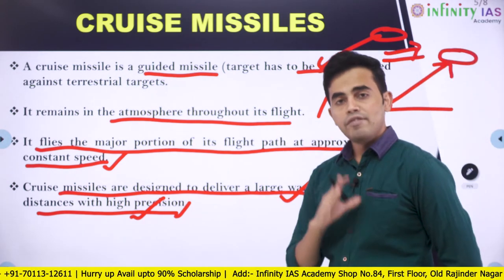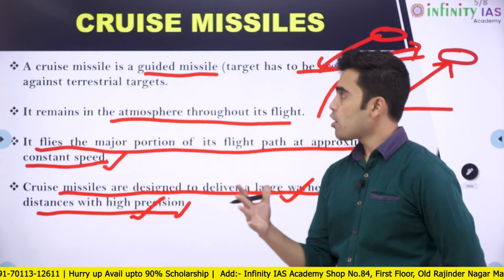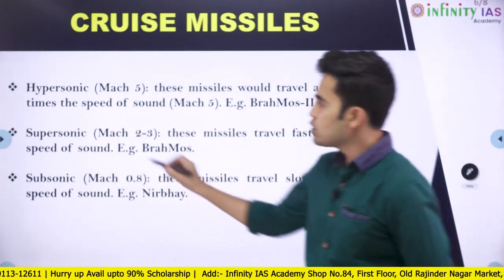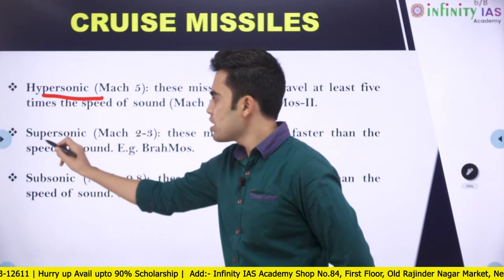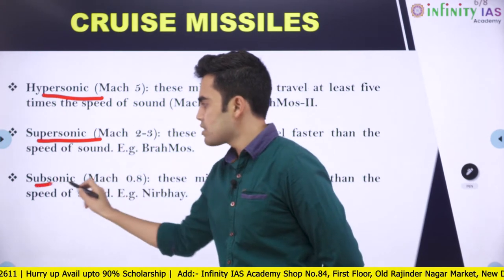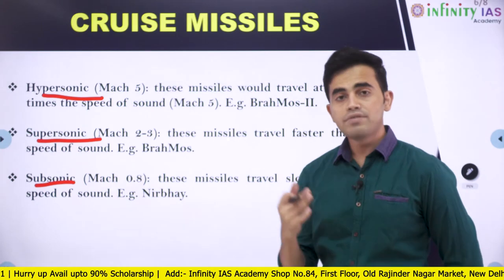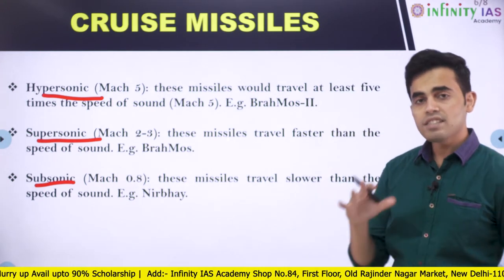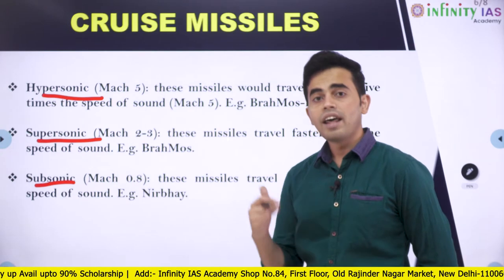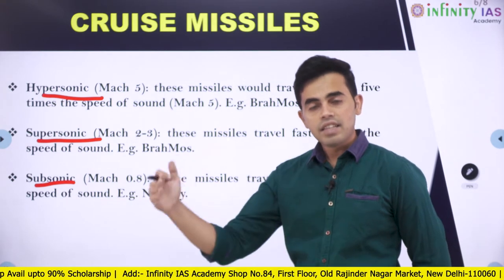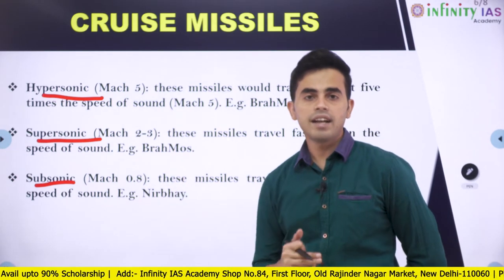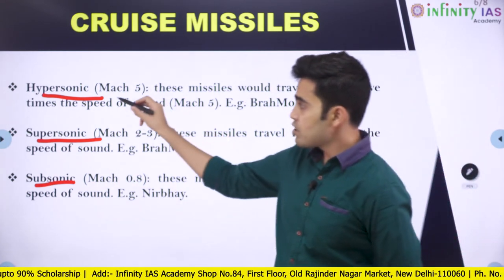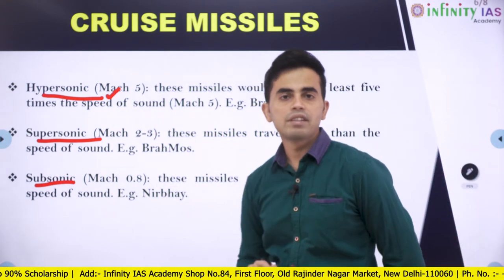With this in mind, we will see what are the types of cruise missiles. Cruise missiles are hypersonic, supersonic, or subsonic. Whereas ballistic missiles are classified based on the range of flight — that is, the distance they can travel — cruise missiles are classified based on the speed at which they can travel.